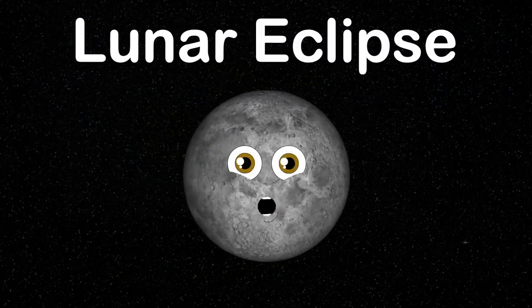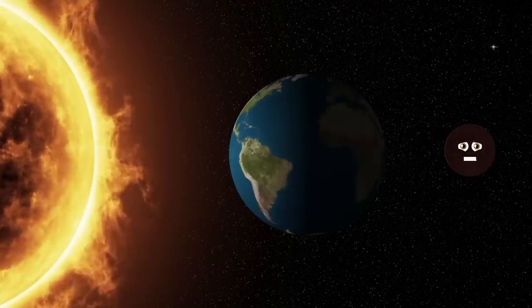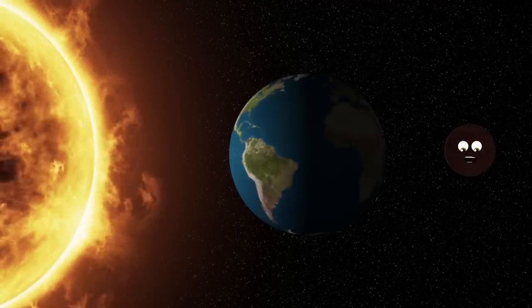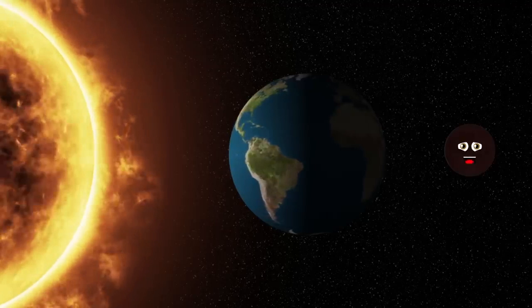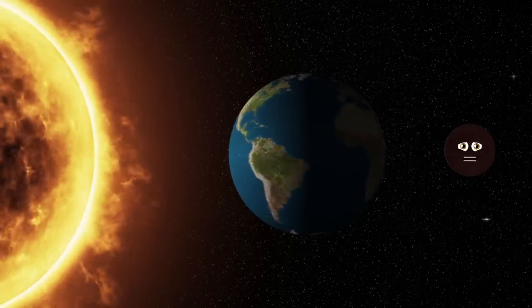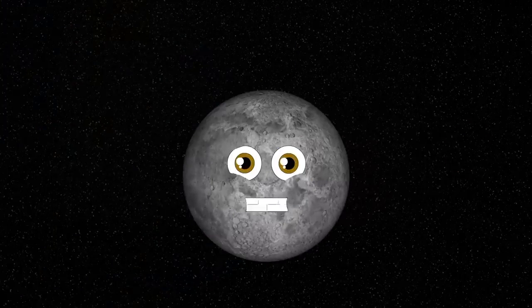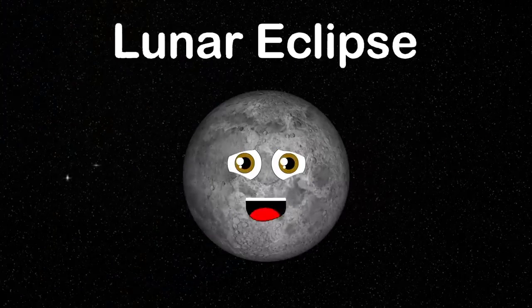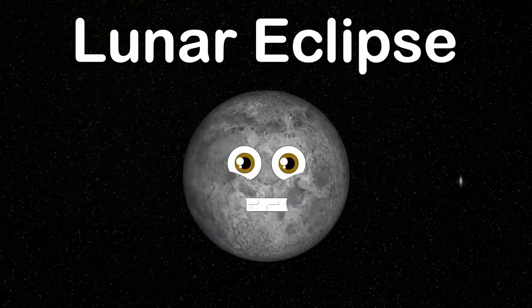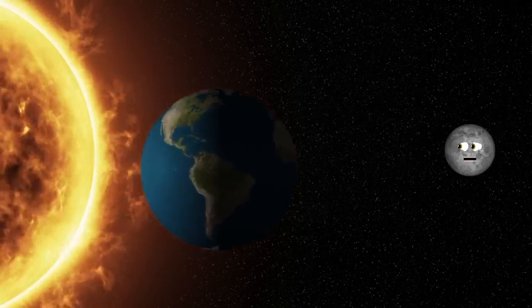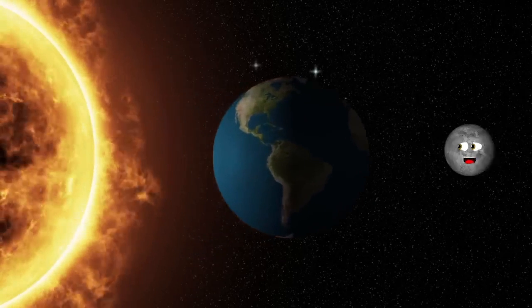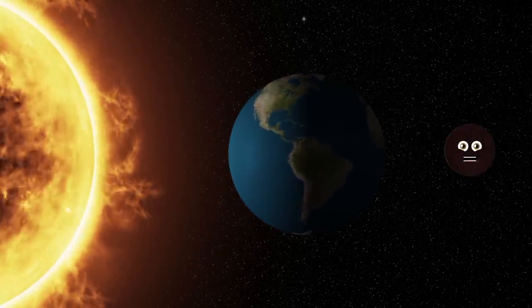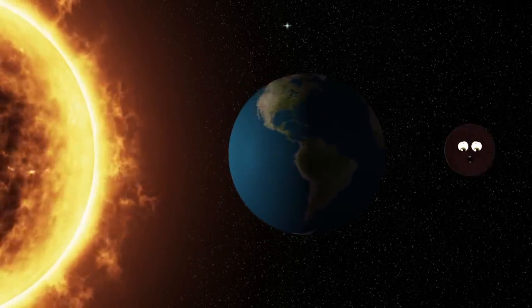Let's learn about the lunar eclipse. It's when the moon darkens as it passes into the earth's shadow. The earth passes between the moon and the sun till the earth's shadow covers it.